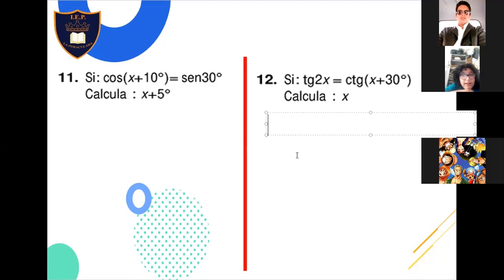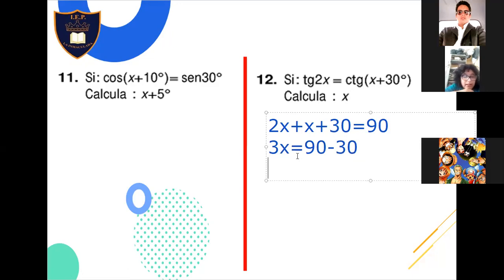Problema 12: X más X, 2X más X más 30, más 30, igual a 90. Sería 3X igual a 90 menos 30. Se divide entre 3 y sería 30. 90 menos 30 que es igual a 60, y 60 entre 3 es igual a 20, profesor.